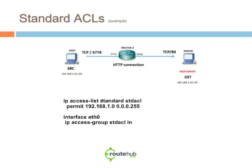Here's something very similar — the same thing, but using a named access list. Here we're just saying 'ip access-list standard' and the name we gave it was STD-ACL, STD for standard. Doing the same thing: permitting the source network and the wildcard mask. How it's applied is kind of the same, but we're using the actual name and not a number.